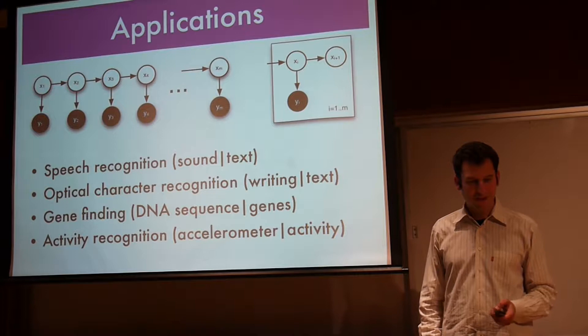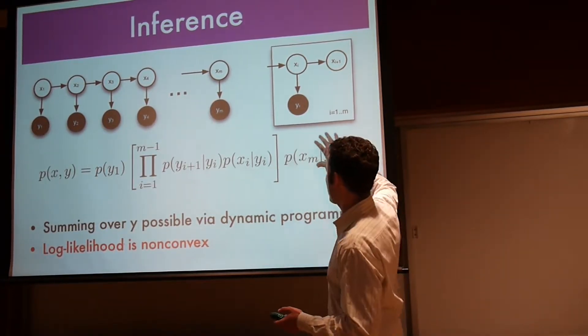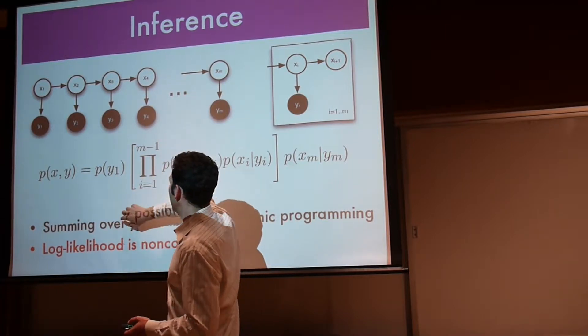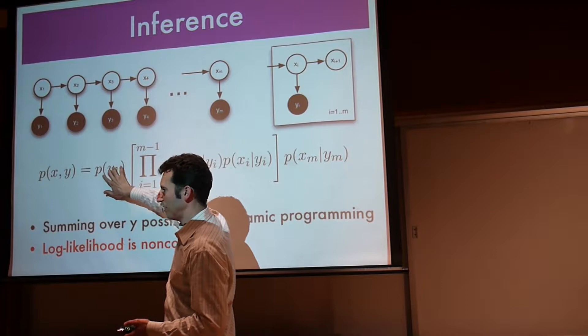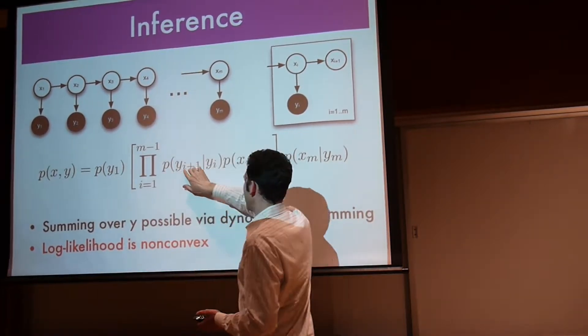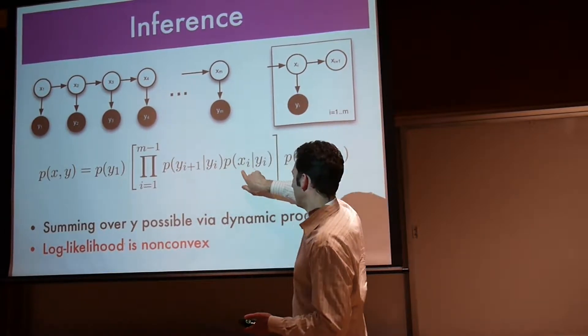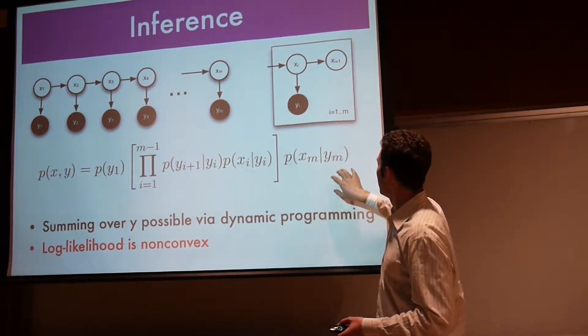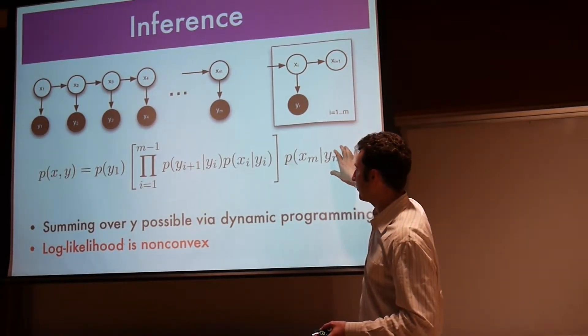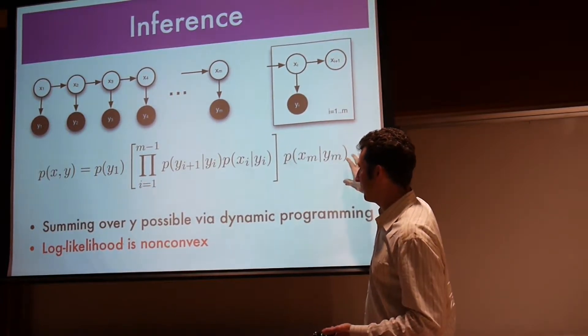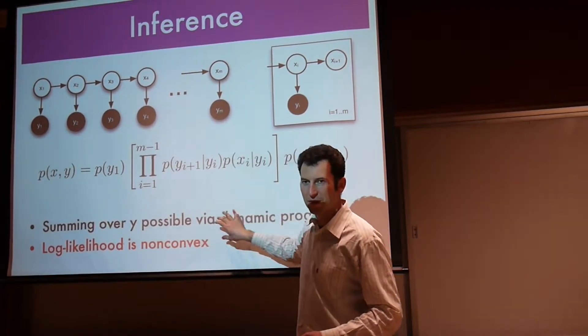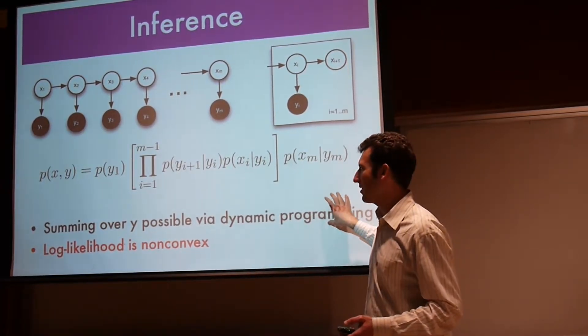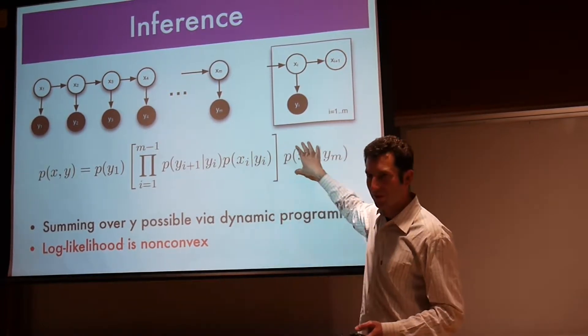Now the question is, how can we do efficient inference? That's basically the model. For the first latent state, I just have to have some assumption of what it behaves like. Then I have a transition model, p of y_i+1 given y_i. And then I have an emissions model, p of x_i given y_i. This is the same thing as what we have in clustering.